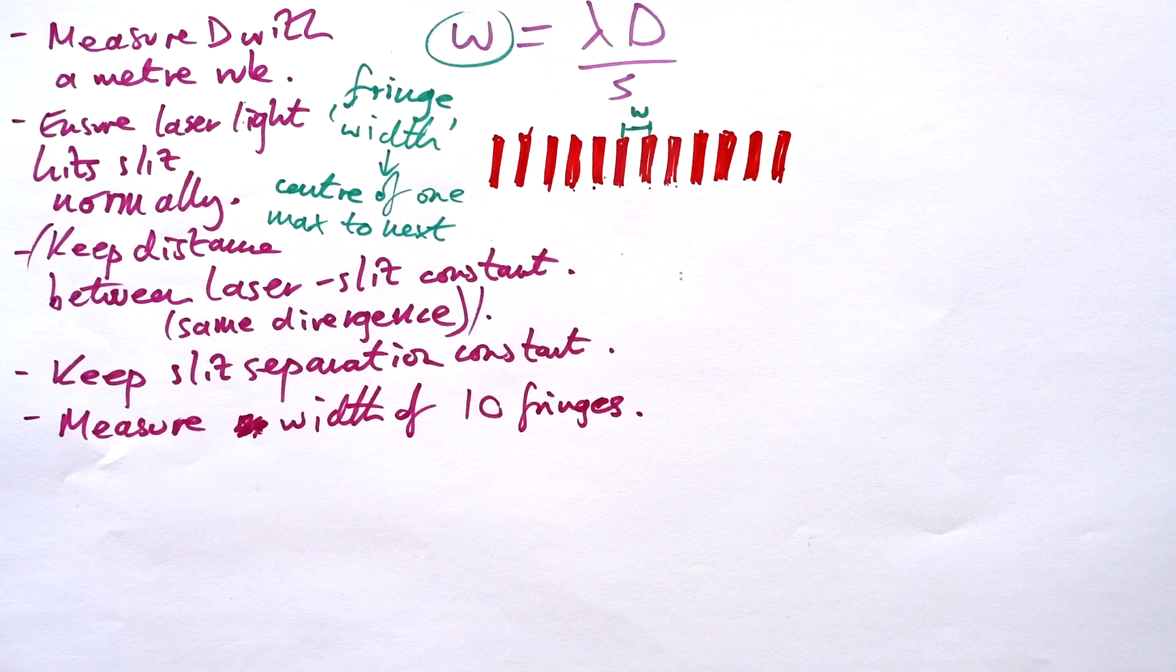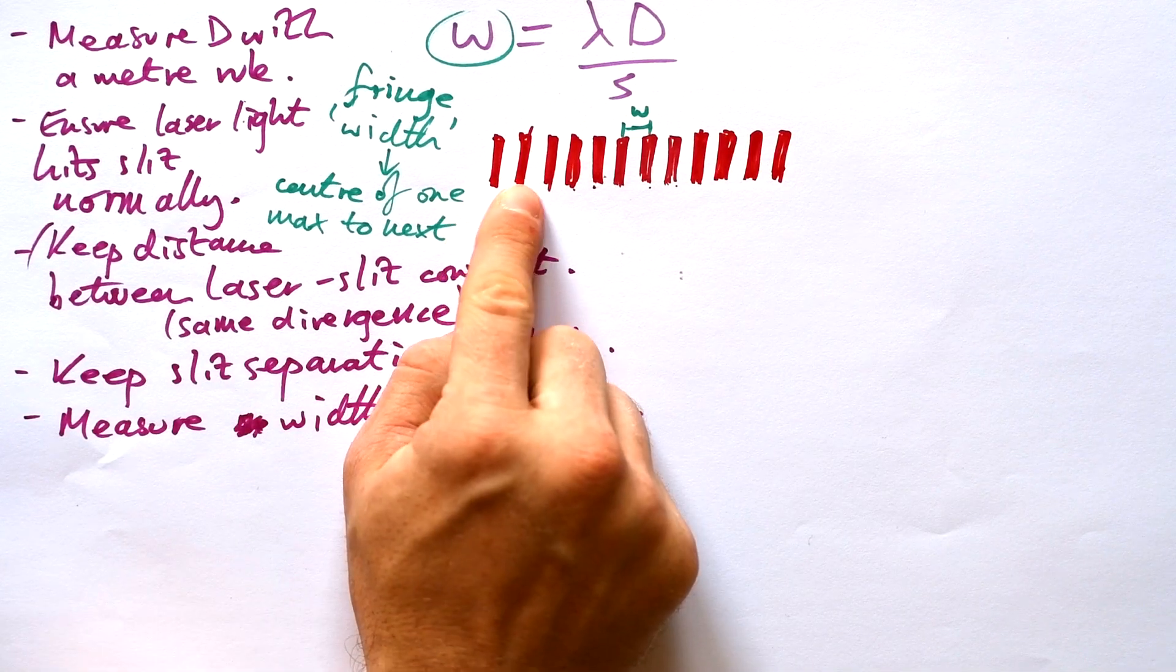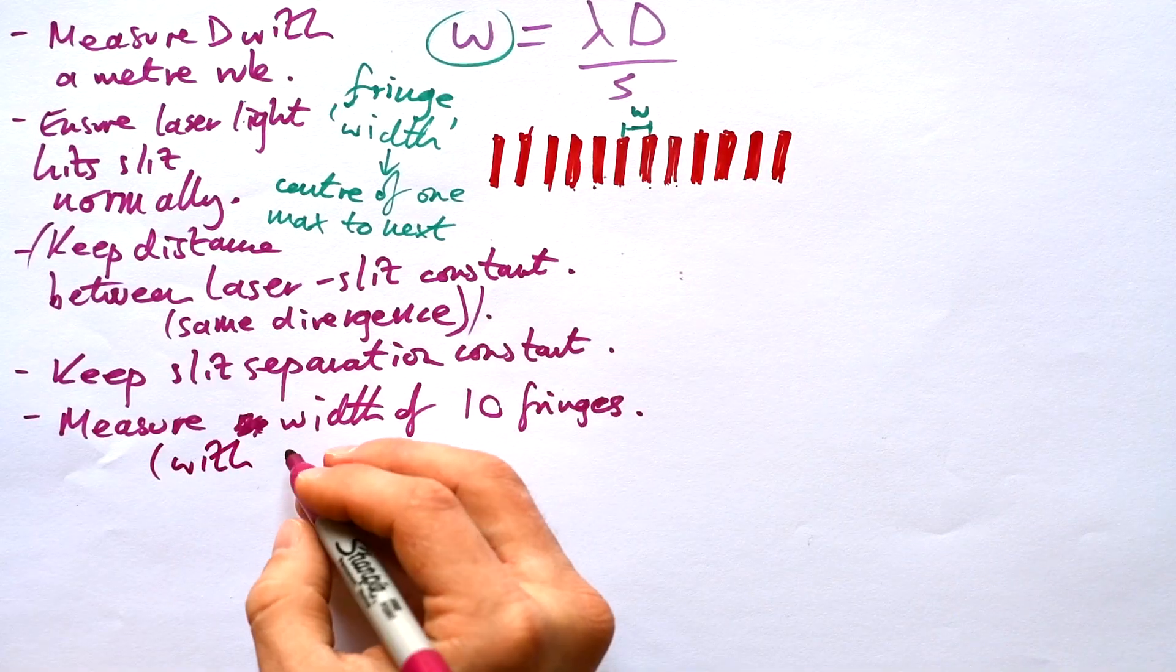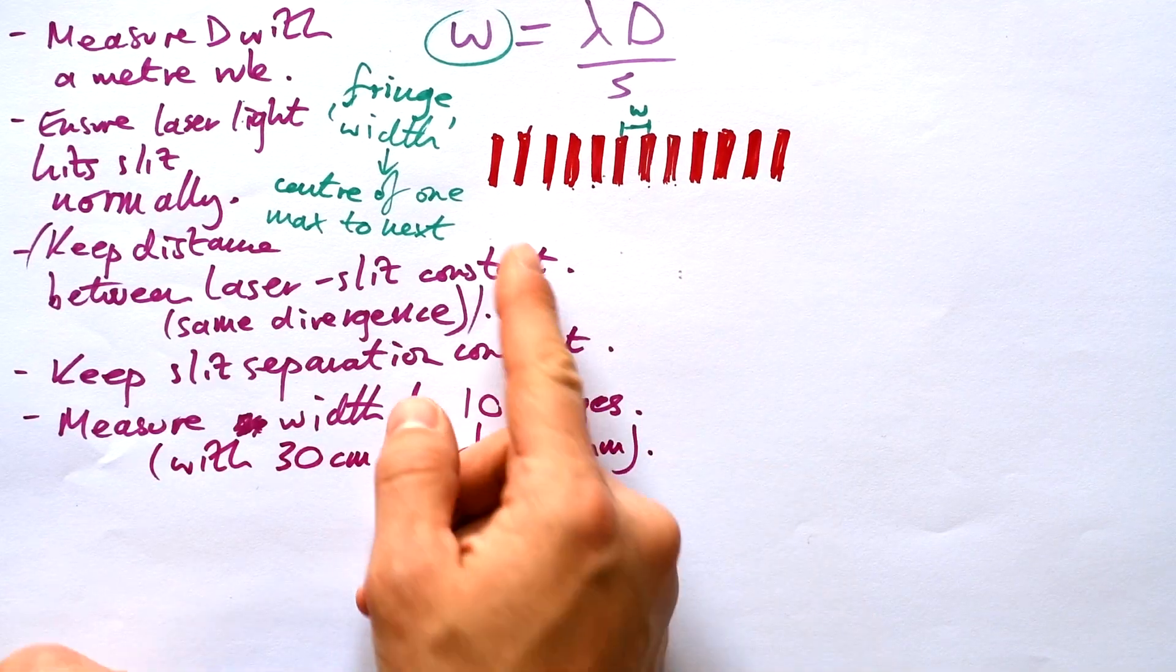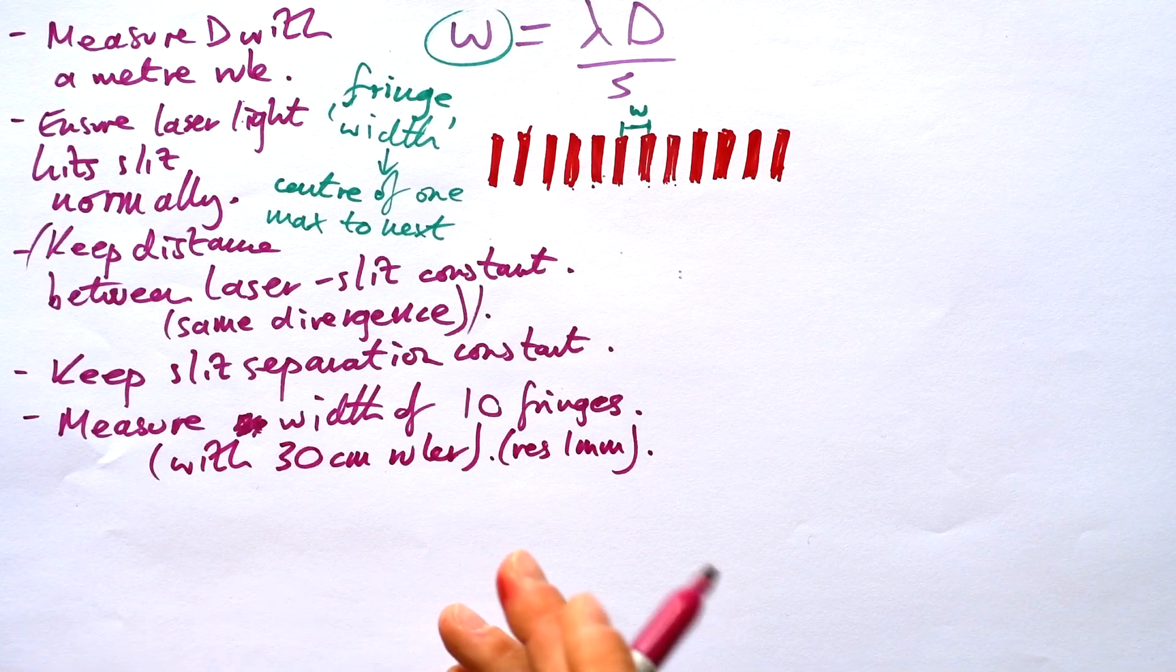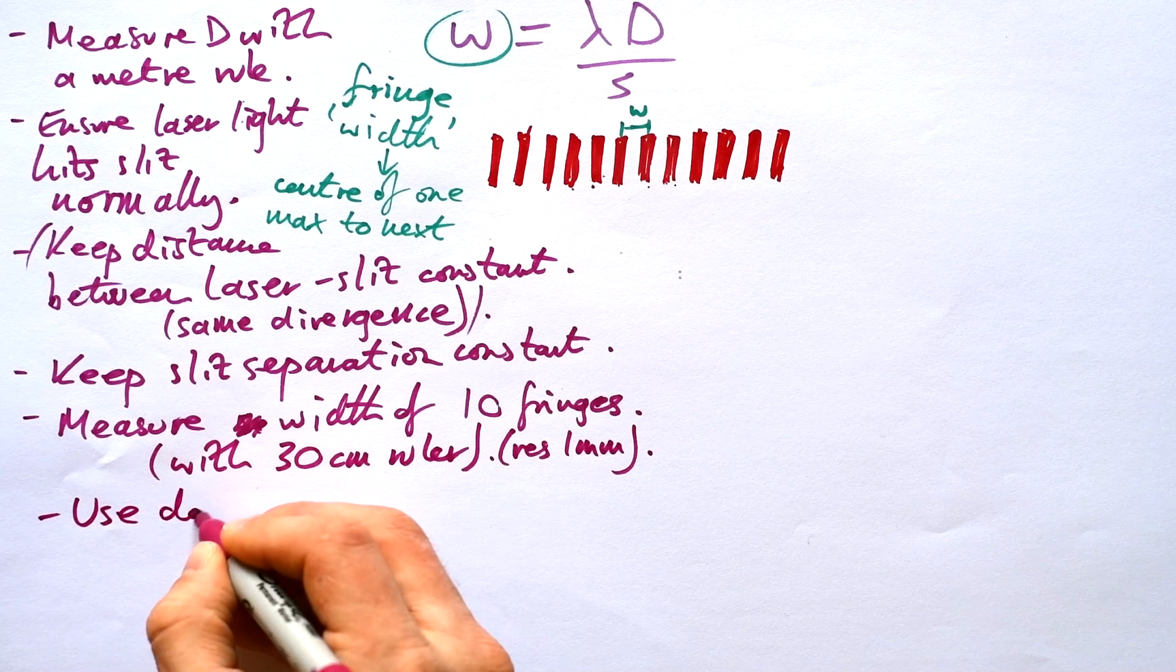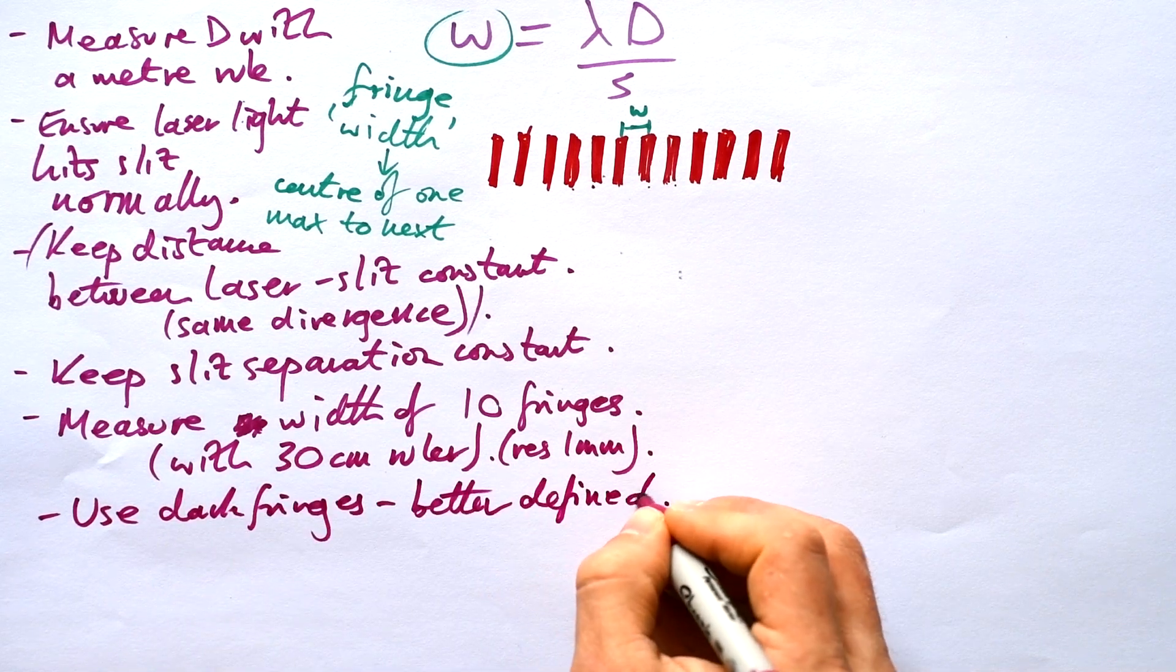Just bearing in mind that the first one that you measure from is going to be your zeroth once we're measuring from the zeroth one 1 2 3 4 5 6 7 8 9 10. Now we're going to measure that with a 30 centimeter ruler resolution 1 millimeter. Now you could measure using the center of the fringes however they're not going to be very clearly defined. What are clearly defined though are the dark fringes. Better defined you're going to end up with a more accurate value.